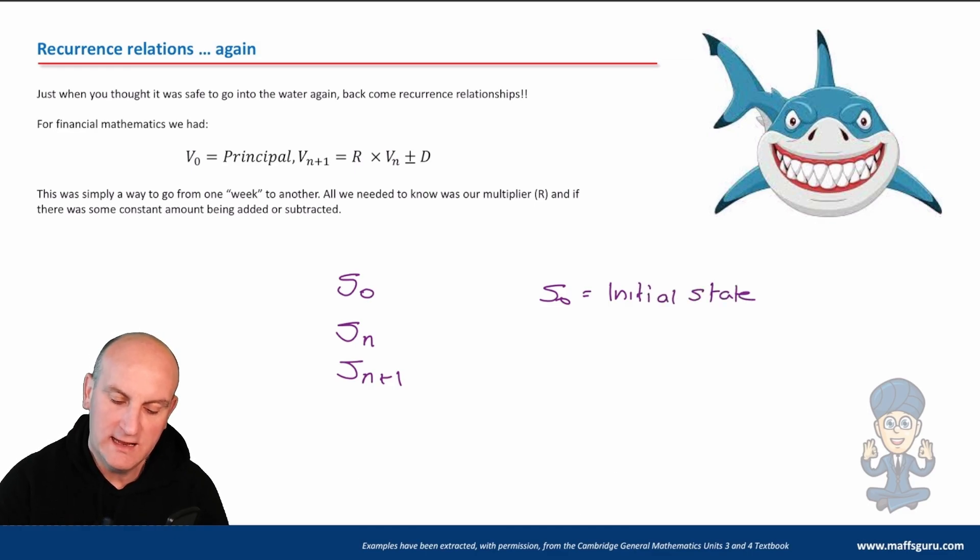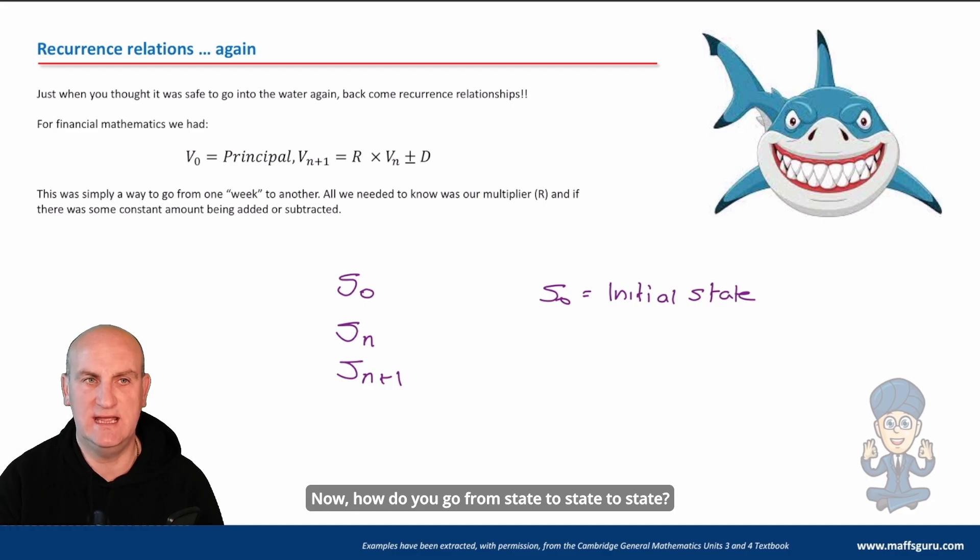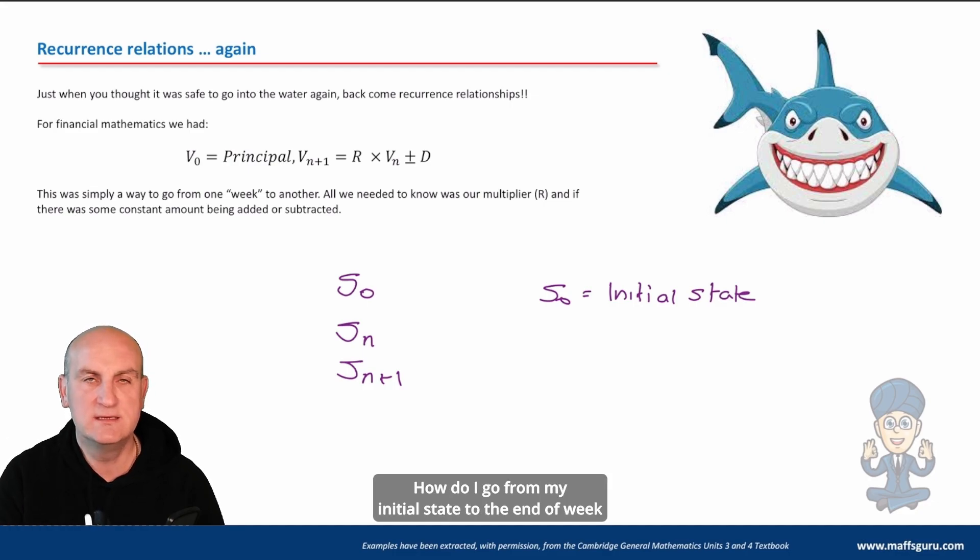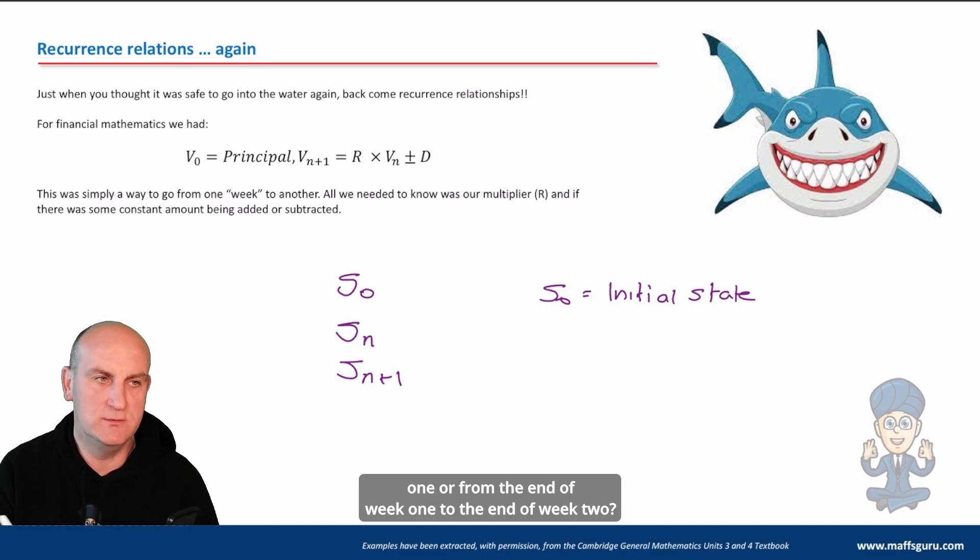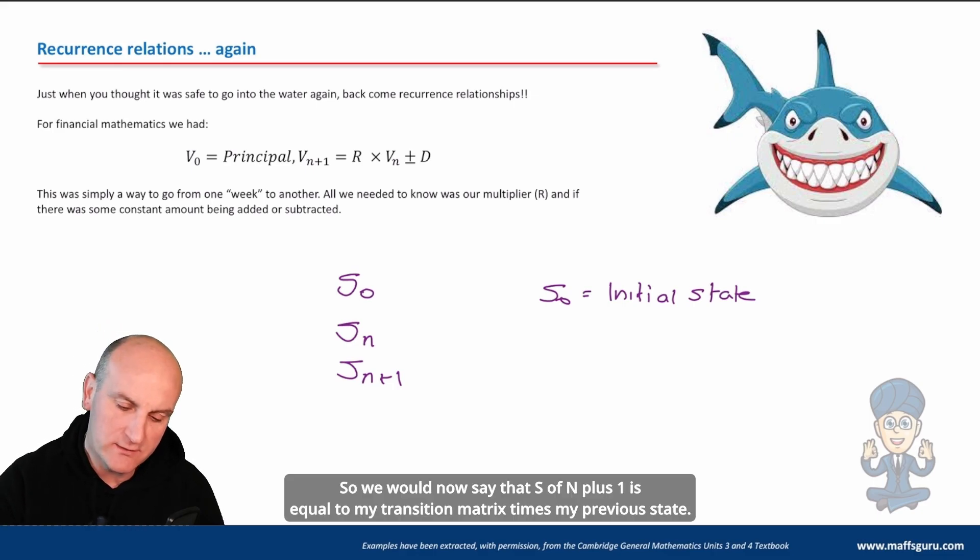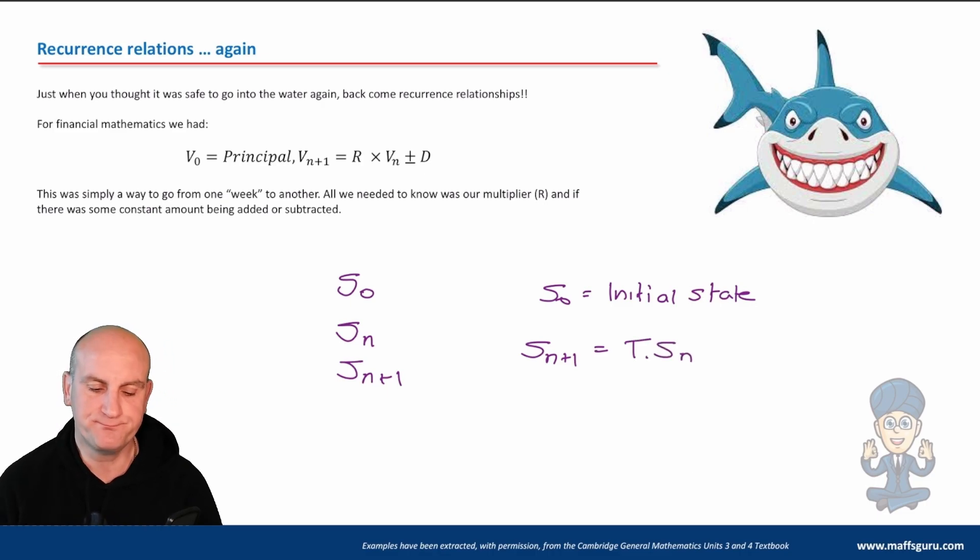How do you go from state to state to state? How do I go from my initial state to the end of week one, or from the end of week one to the end of week two, and so it goes on? Well, that's where we multiply by my transition matrix. So we would now say that Sₙ₊₁ is equal to my transition matrix times my previous state.